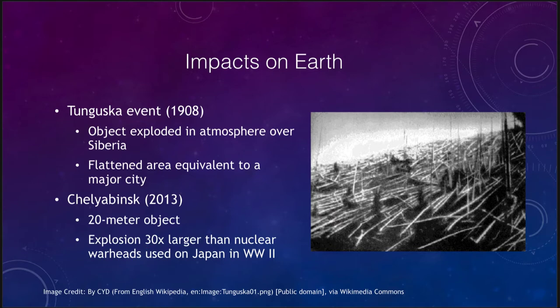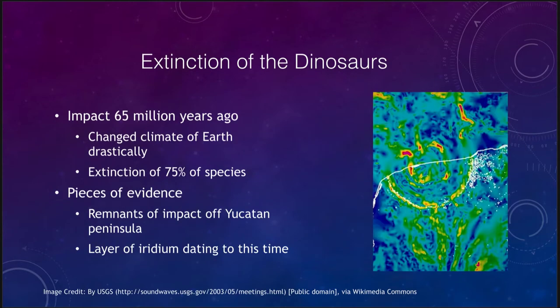One of the major impacts we look at is the extinction of the dinosaurs. The evidence points to an impact 65 million years ago that changed the climate of the Earth. When you crash something into the Earth, you can throw so much material into the atmosphere that you can significantly cool off the Earth.